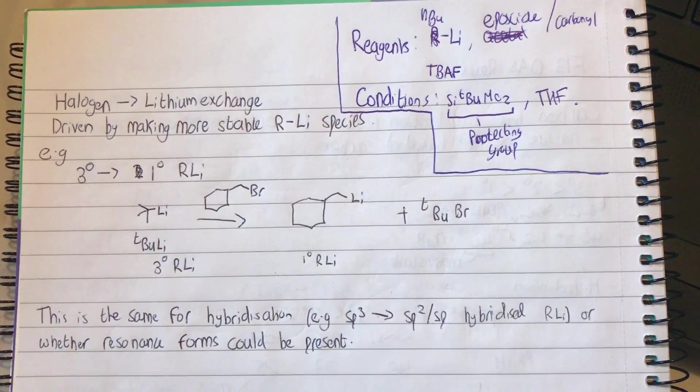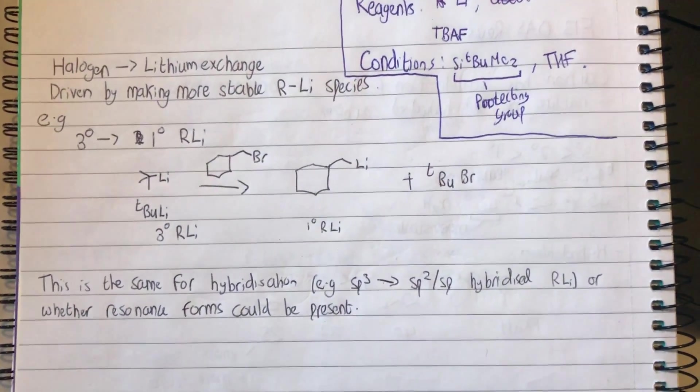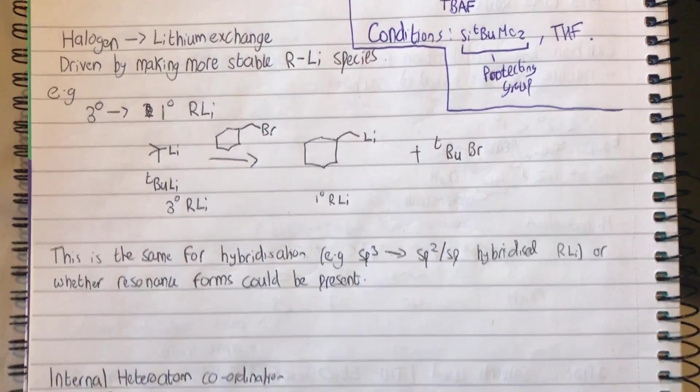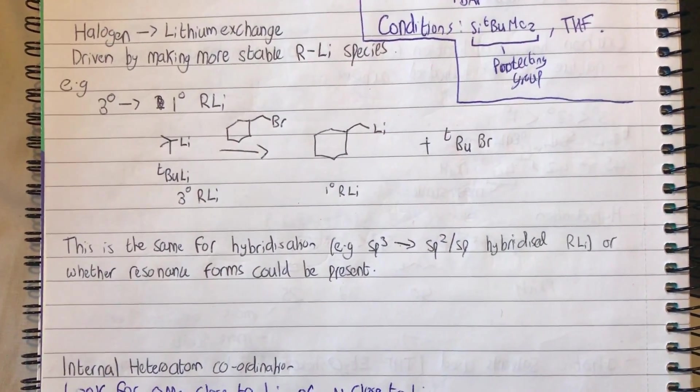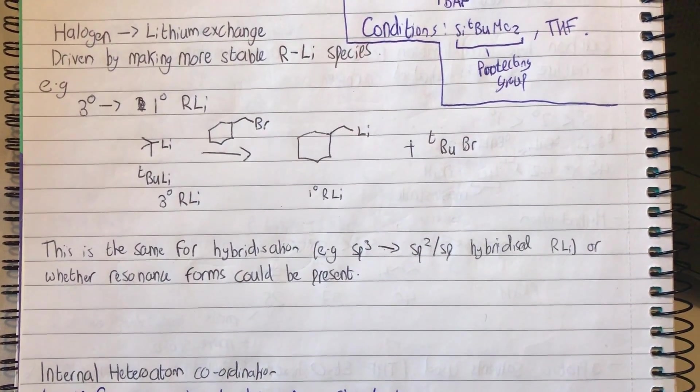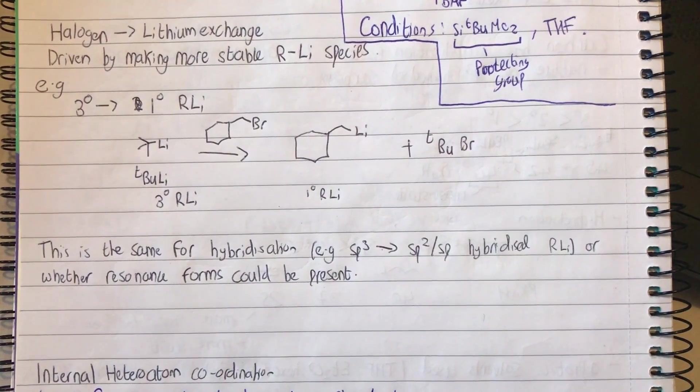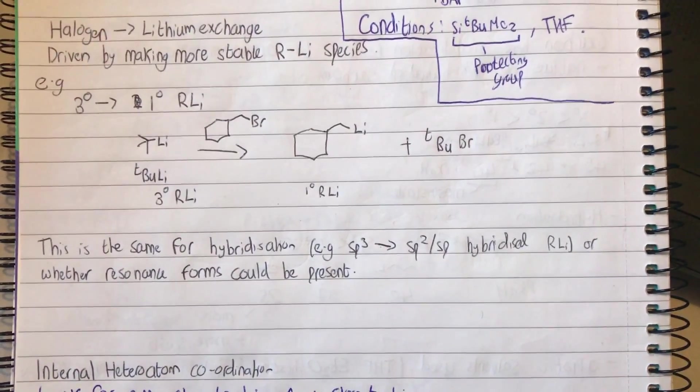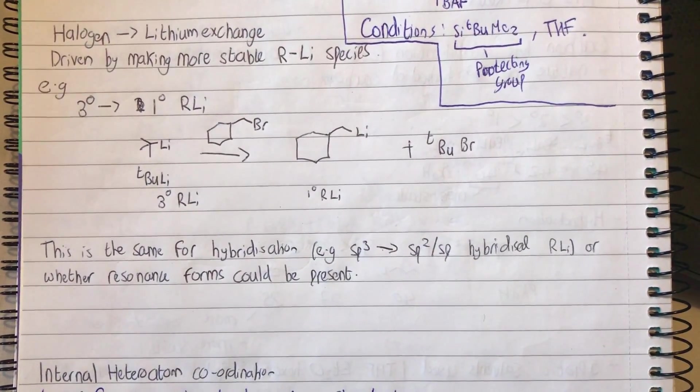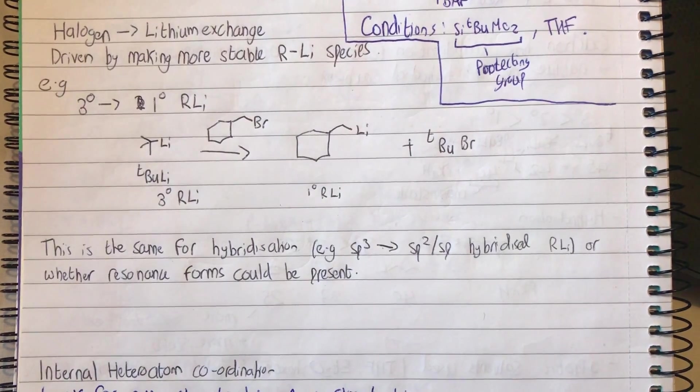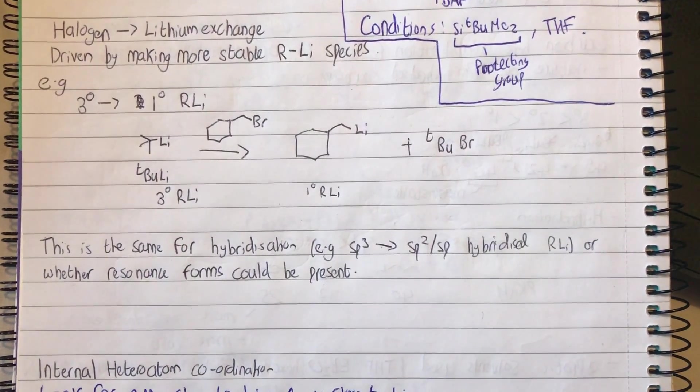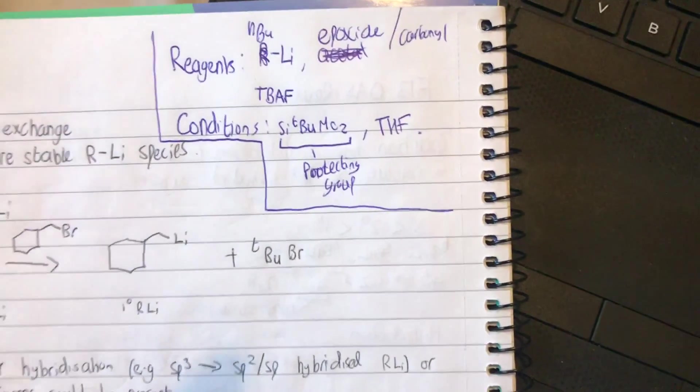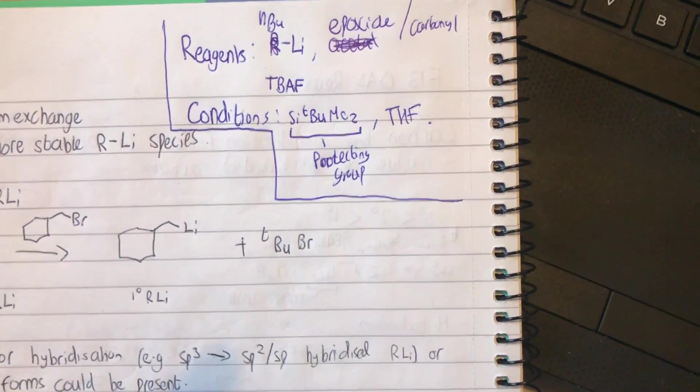The general scheme is that this reaction is driven by making a more stable R-Li species. A more stable R-Li species is either going from a tertiary R-Li species such as tertiary butyl lithium to a primary one, or going from an sp3 hybridized R-Li to an sp2 or sp hybridized R-Li.